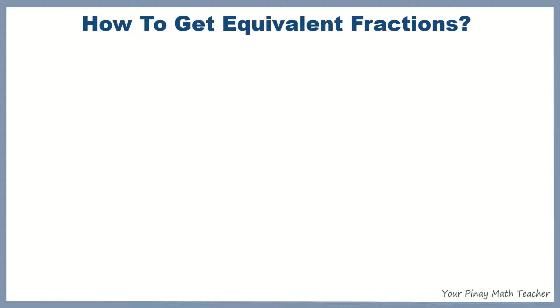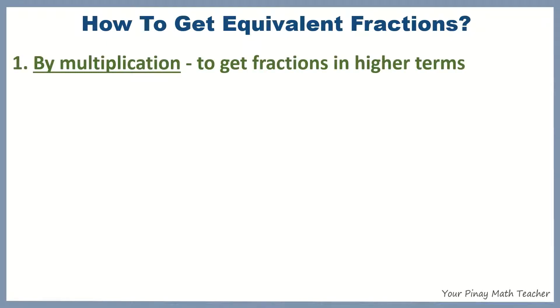If you want to get fractions in higher terms, then you do multiplication. You multiply both numerator and denominator of the given fraction by 2, 3, 4, 5, 6, 7, and so on. Do not multiply both of them by 1 because what you will get is the same as the given fraction.